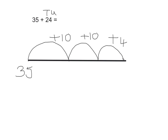Now go back to the beginning of your number line. So 35 add 10 equals 45, add 10 more equals 55, add four more equals 59. So the answer to our number sentence was 59.